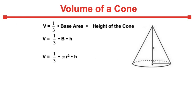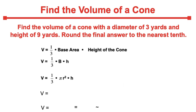And h stands for the height of your cone. So let's check out a question. We've got the volume of a cone. That's what we're looking for. You have the diameter of the cone is 3 yards and the height of the cone is 9 yards. We need to round the final answer to the nearest tenth.